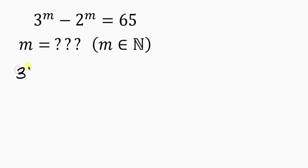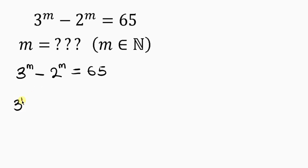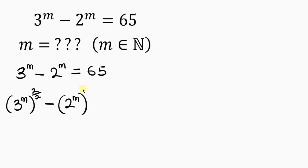We have 3 to the power of m minus 2 to the power of m equal to 65. I want to make this expression a difference of two squares. So 3 to the power of m — I want to make it a square, but I can't just introduce a square, so I'll divide the power by 2. I'll do the same thing for 2 to the power of m: put a square but divide by 2, because I need difference of two squares. When I divide by 2, it's still the same thing.